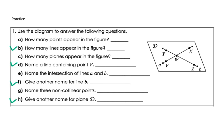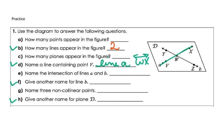The first one: how many lines appear in the figure? There are 2 — that would be line A and B. Name a line containing point B — that would be line A, or you could also say line W, X. Line W, X does contain point B.